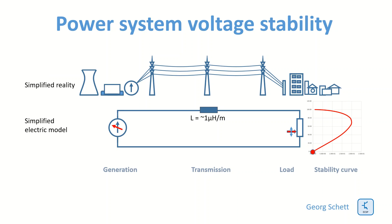What we would have achieved is a total blackout, and the risk that the generator or other equipment fails or breaks is pretty high. Therefore in reality any system operator will do whatever is possible to avoid such a critical condition.